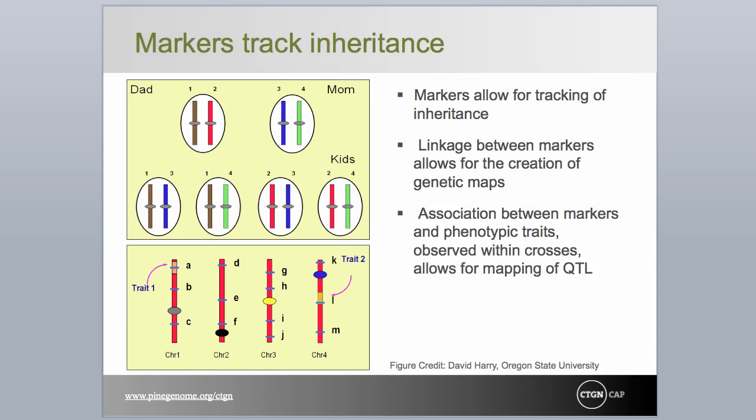So markers help track inheritance of traits. In Mendel's case, he used morphological markers that were simply inherited and reflected segregating alleles at independent loci. It is possible to identify markers that have four or more allelic forms in a population, such that all four chromosomes in a parental pair can be uniquely identified and followed through generations. By observing the ratios of parental to recombinant marker classes, we can create genetic maps, where markers are arrayed on different linkage groups or chromosomes.